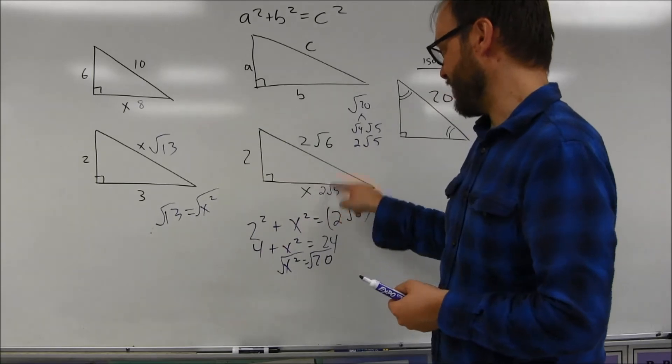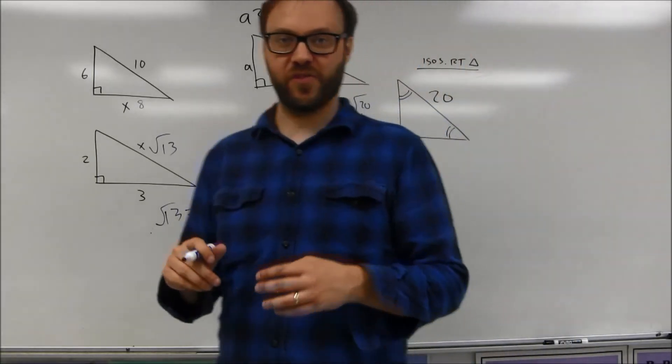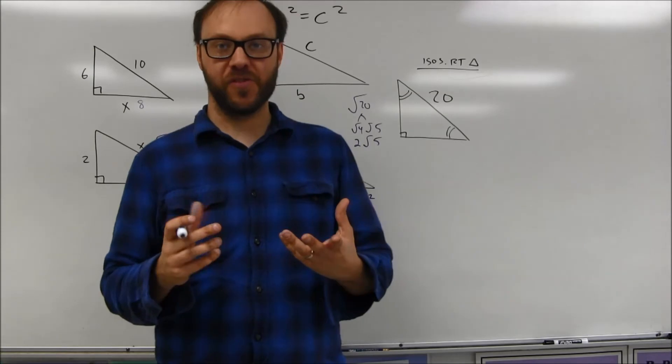So 2 squared plus 2√5 squared is going to give you 2√6 squared. That's how the theorem would work for some of these tougher examples.